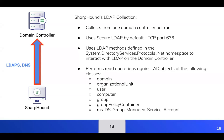SharpHound reads from several object classes: the domain head, OUs, user objects, computer objects, security groups, group policy containers (GPOs), and MSDS group managed service accounts (GMSAs). For example, from the security group object class, it reads the members property — a set of distinguished names showing all principals added to that group. This is useful because of how security group delegation works in Active Directory: if you belong to a group with certain privileges, you also have those privileges by virtue of group membership.